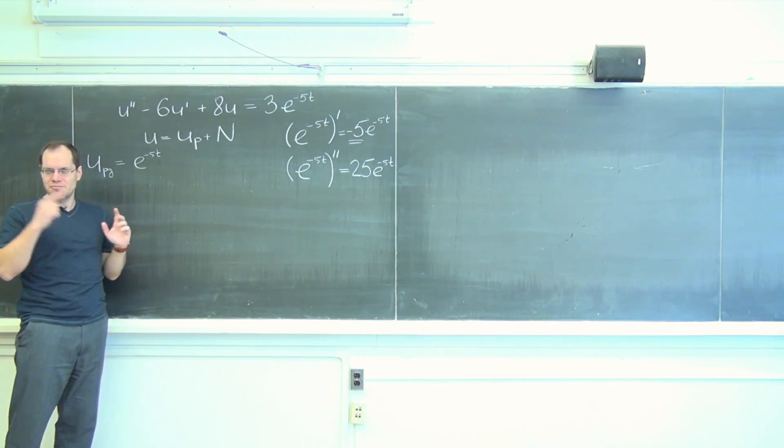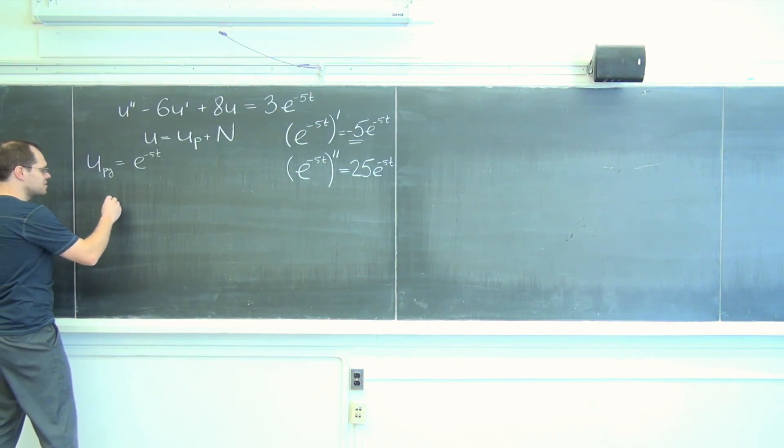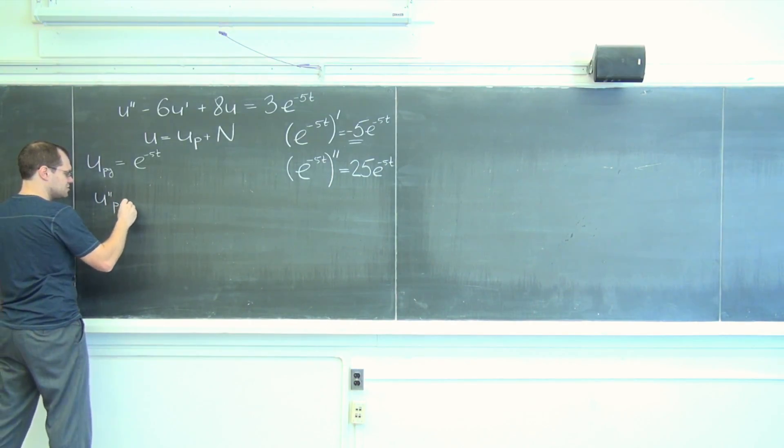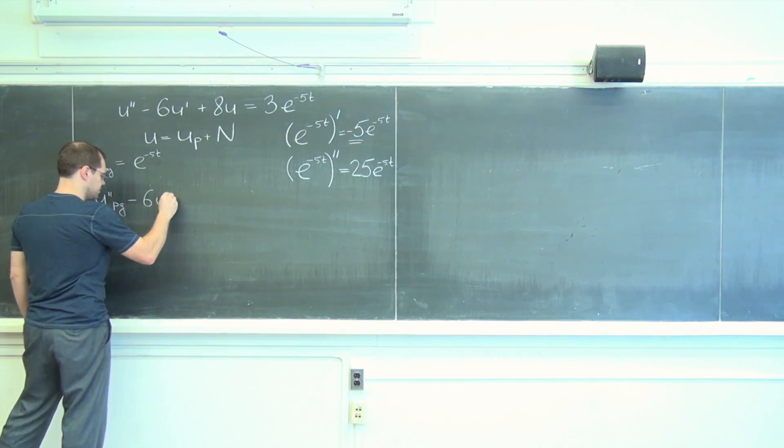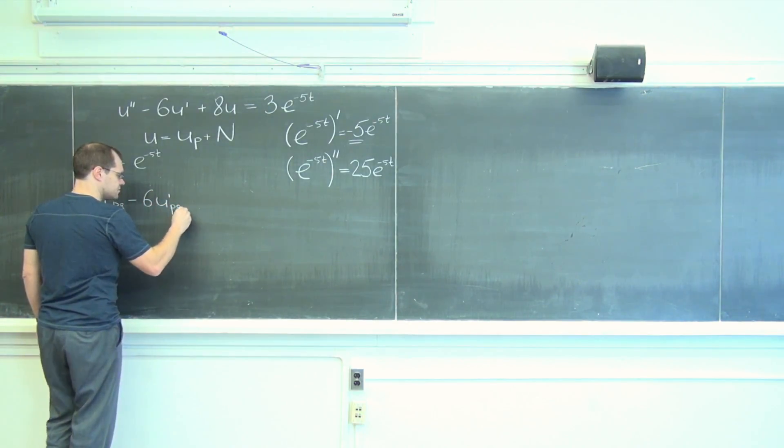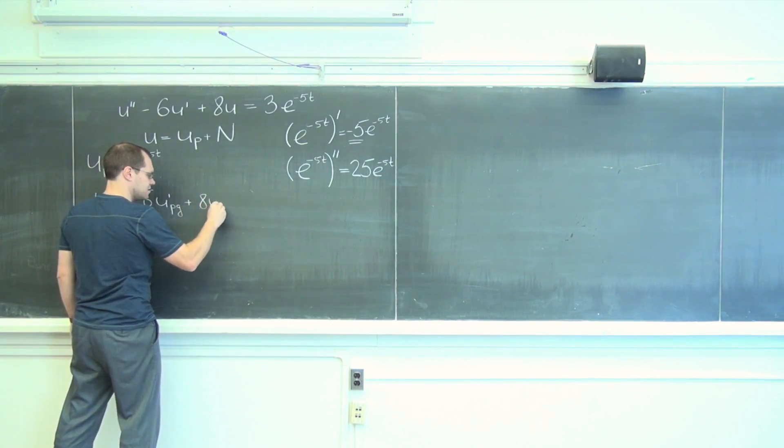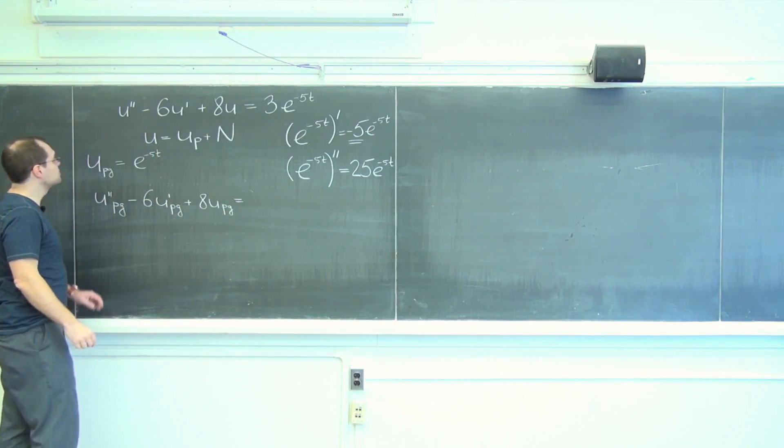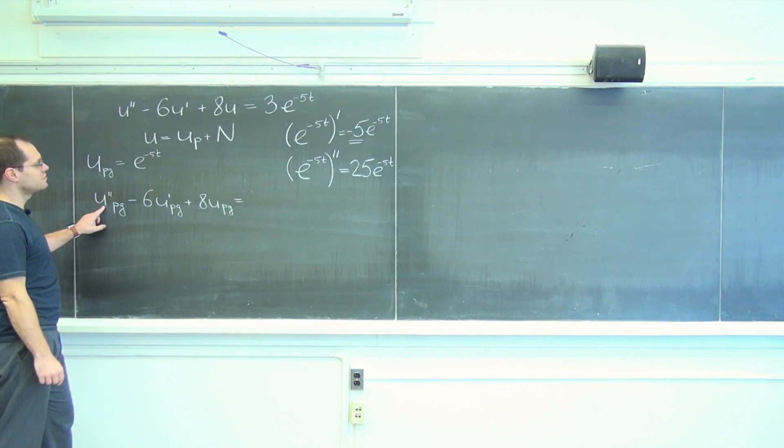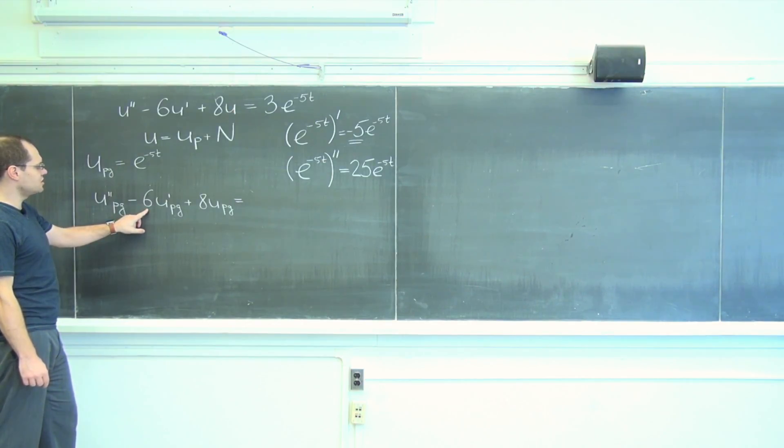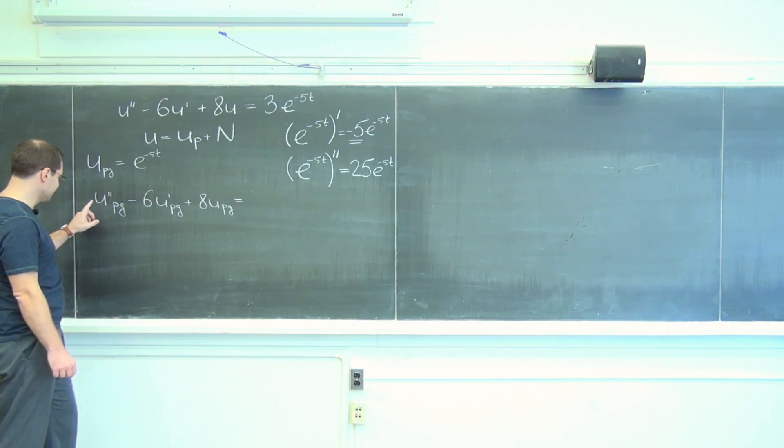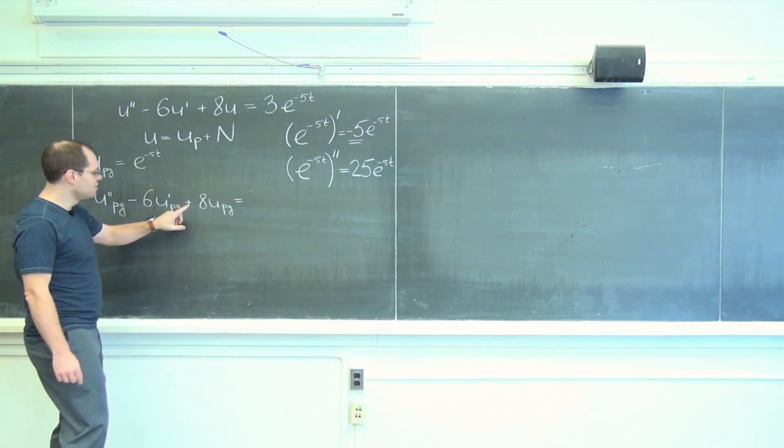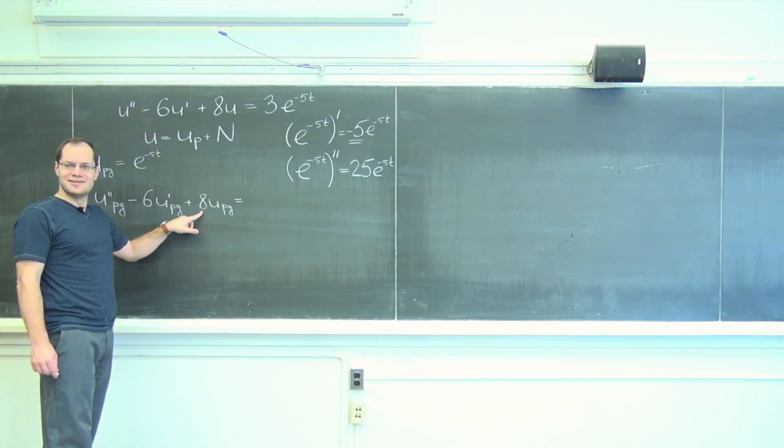So I'll actually write it down, but then I'll do the simple arithmetic in my head. So u double prime, a particular solution guess, minus six u prime PG plus eight u PG equals 25 plus 30. Holy moly, am I right? 25 plus 30, 55 plus 8, 63. 63.